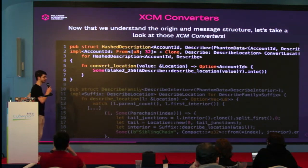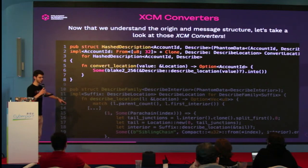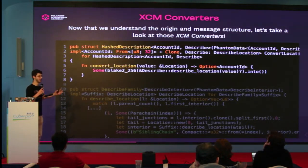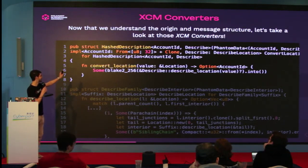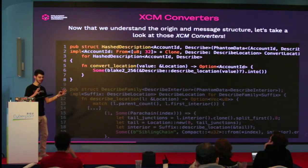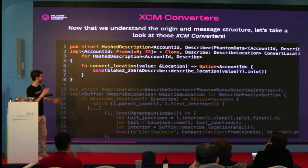Let's talk about the XCM converters — the way we derive accounts. All the code in this slide is from the XCM builder crate, which is basically a compilation of configurations for chain runtimes to do basic things with XCM. This struct allows you to take a location, describe it, hash it, and then convert it to an account ID. The convert location input is a location; the output is the Blake2256 hash of the described location transformed into an account ID.